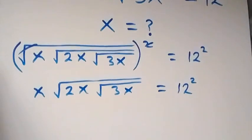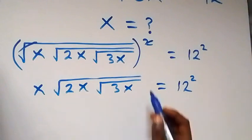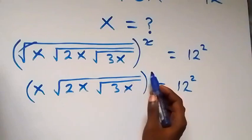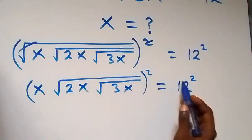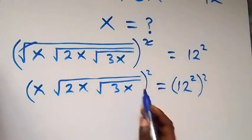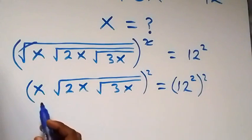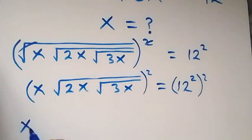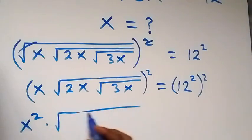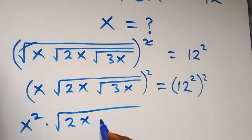Next step, we square both sides again — that is, square this side to the power of 2. This square will affect x, so we have x squared, then it will affect square root of 2x, then square root of 3x as well.